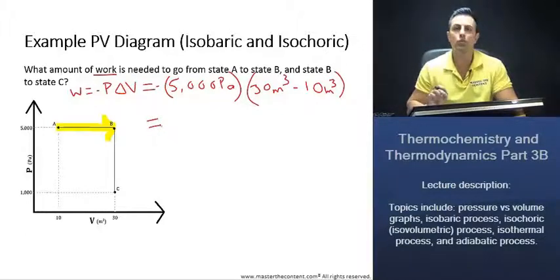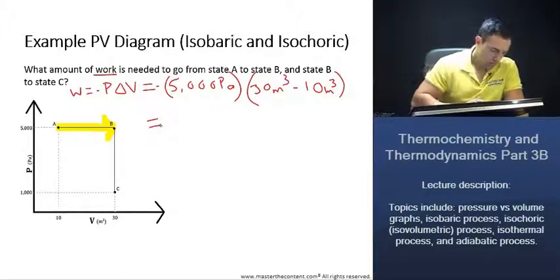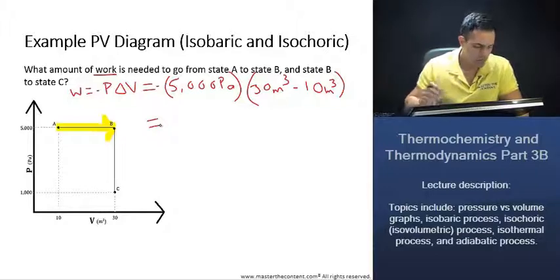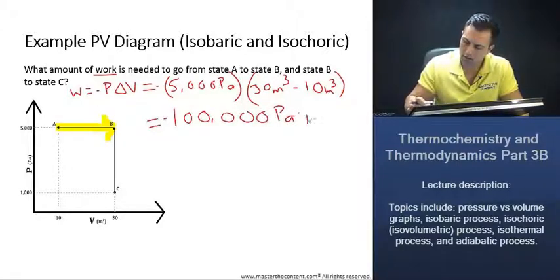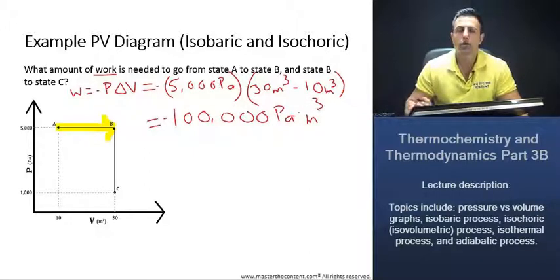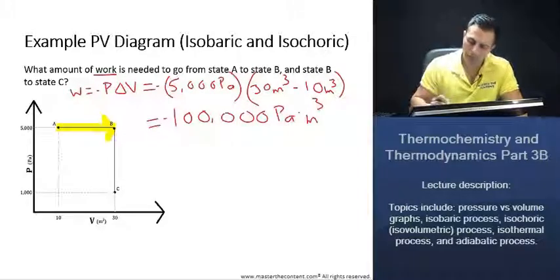Once we go ahead and we equate this, we should end up with a value of roughly 100,000 pascals meters cubed. If we recall, work is in joules. So how do we now get to work from here?